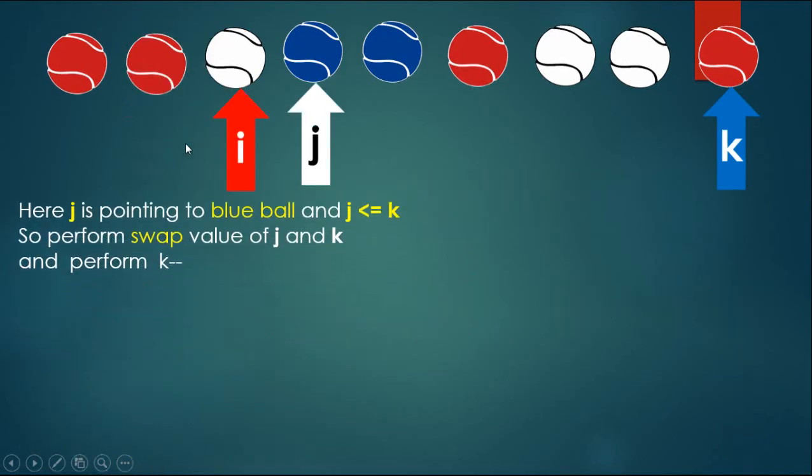Here j is pointing to a blue ball and j less than or equal to k, so perform swap of value of j and k, and perform k--.